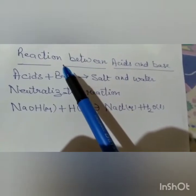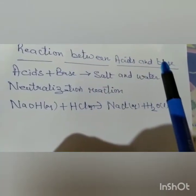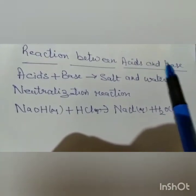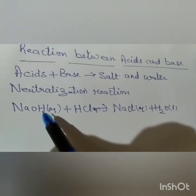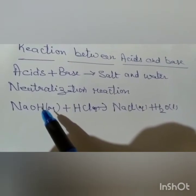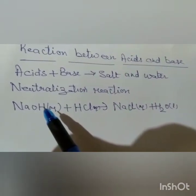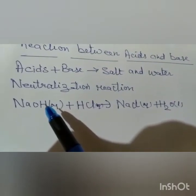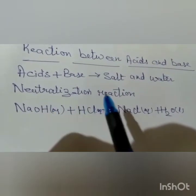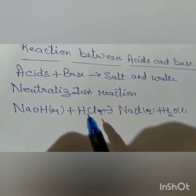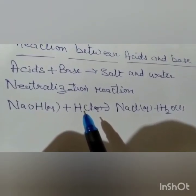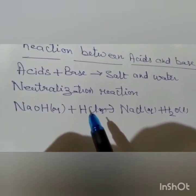Now we will learn about the reaction between acids and base. Take 2 ml of dilute sodium hydroxide solution — sodium hydroxide is a base — in a test tube. Add 1 or 2 drops of phenolphthalein indicator. The color will change to pink because phenolphthalein in sodium hydroxide gives pink color. Now slowly add hydrochloric acid — you will observe that the pink color starts fading and changes to colorless.